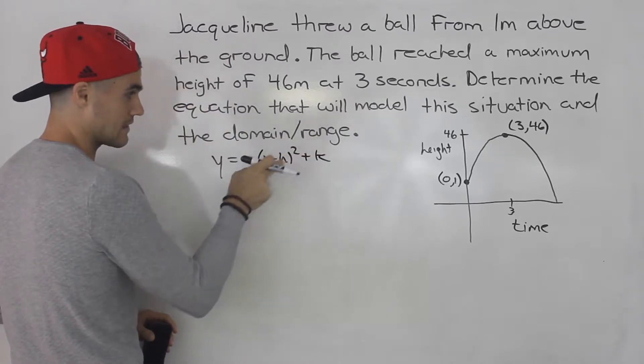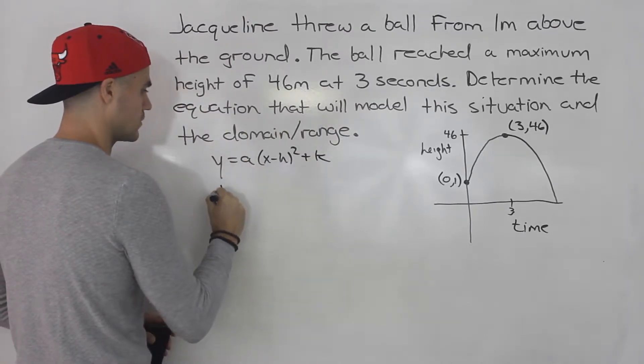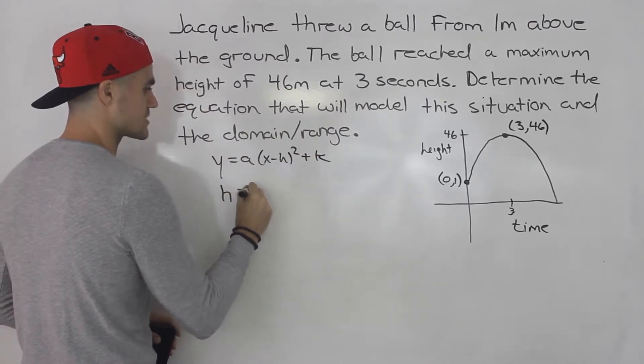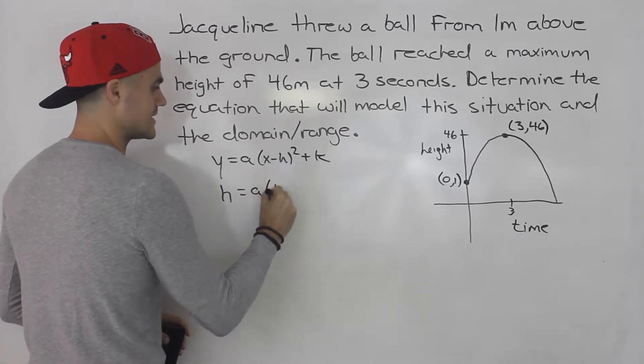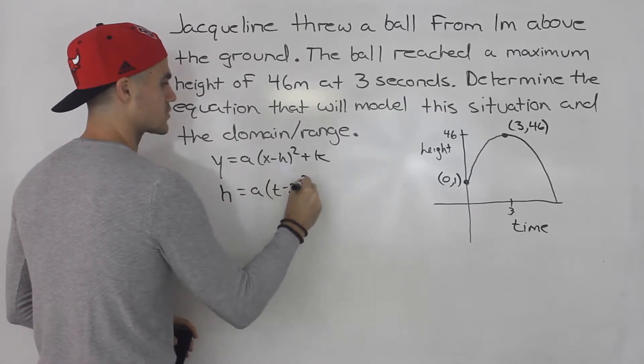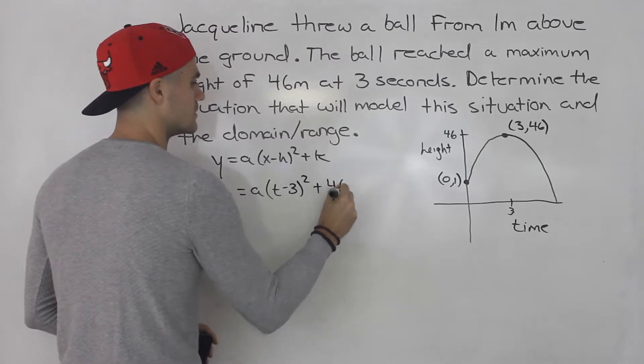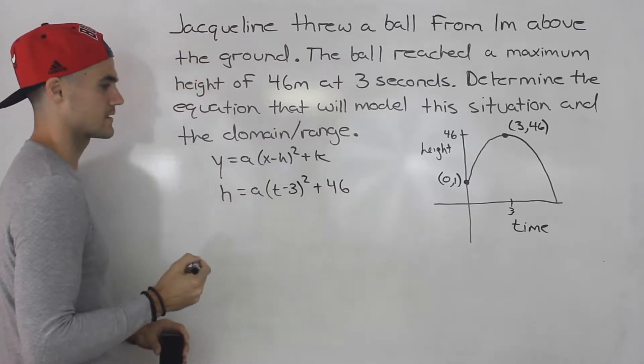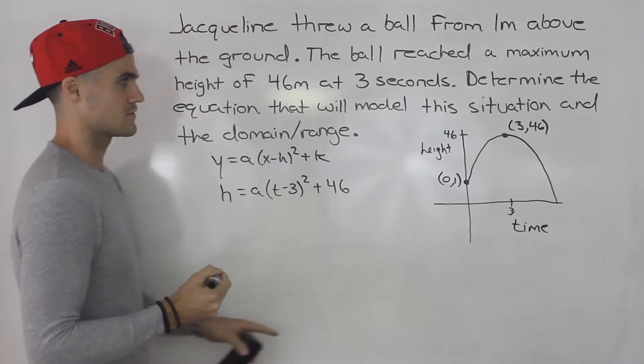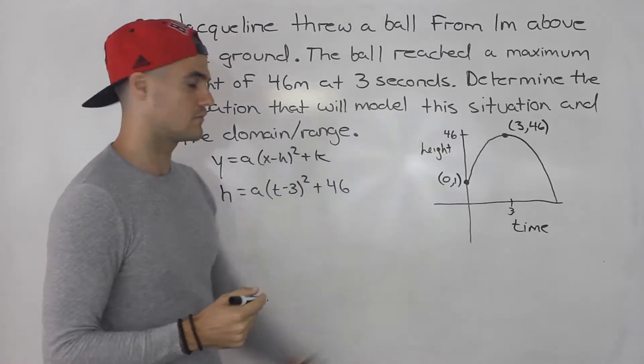So if we relate this back to the scenario we're working with, we'll have h = a(t - 3)² + 46, because the vertex is 3 and 46. So now we just have to solve for this a value.